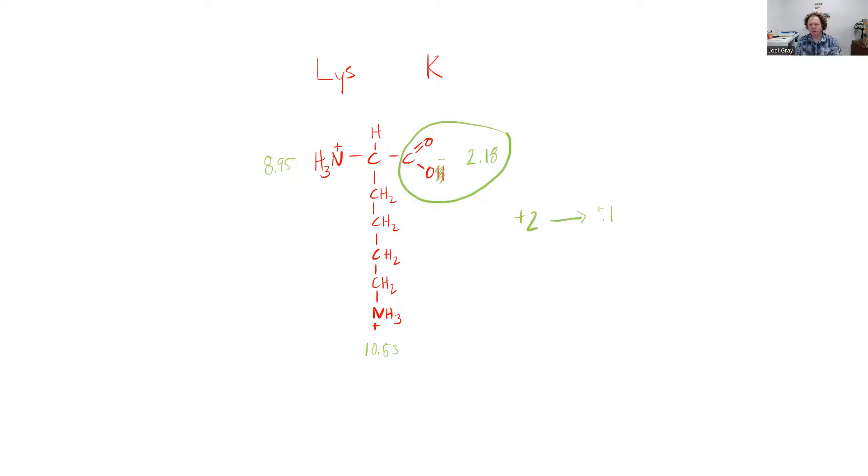Right at about a pH of 2.19, if the pH of a solution was 2.19 and had lysine in it, the predominant form would have a charge of +1. Is there still the +2 form of that molecule in there? Absolutely, but it's the minority group there.